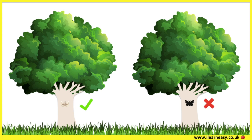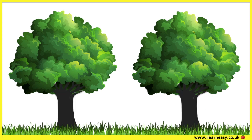During the Industrial Revolution, many factories were built and the burning of coal for fuel resulted in dark smoke covering the environment, resulting in the darkening of trees. This meant that the light-coloured moths were easily spotted on the darker trees as they could no longer camouflage.